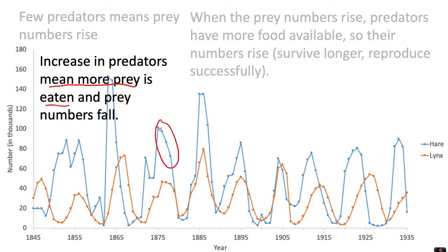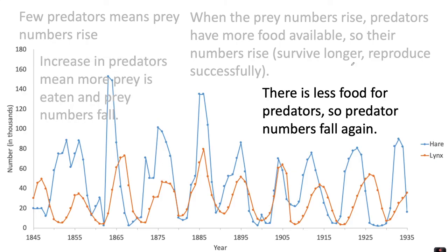There is now less food for the predators, so the predator numbers start to fall again. The prey starts to rapidly decline, and then you'll notice here so does the lynx — that starts to fall again.